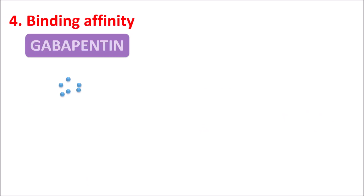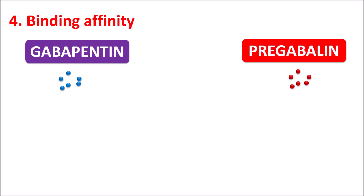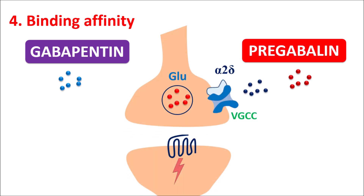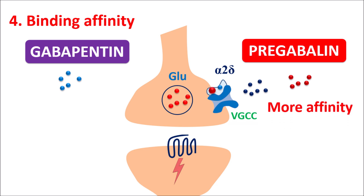The fourth point is binding affinity. Both Gabapentin and Pregabalin act in a similar way by binding to the alpha-2-delta site of voltage-gated calcium channels, but the binding affinity is somewhat different. Pregabalin shows more binding affinity. Because of this higher affinity, Pregabalin can be used at a lower dose in controlling neuropathic pain.